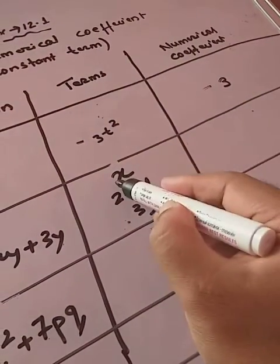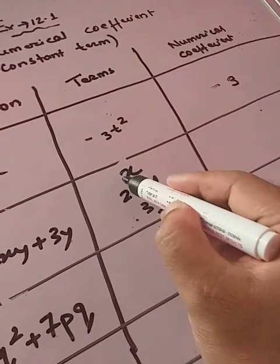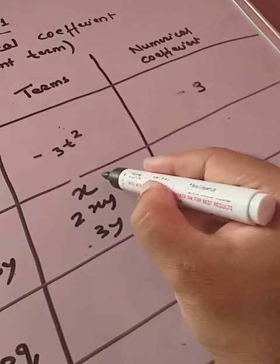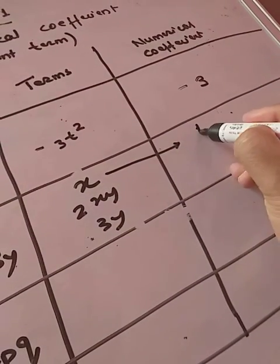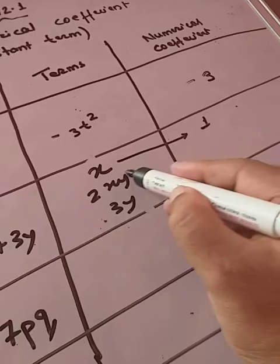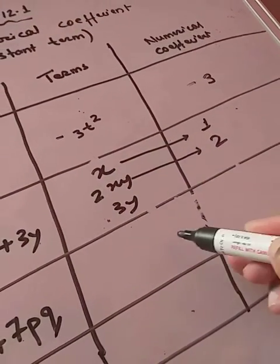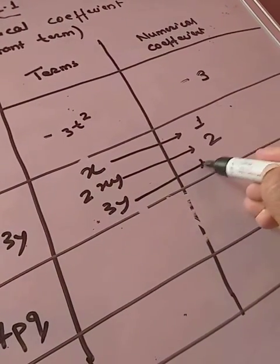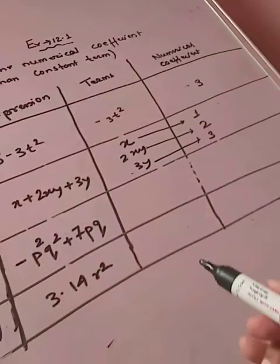Now, for this, what is the number? Do you find any number is there? If you do not see any number, that means 1 is there. So, for this, numerical coefficient is 1. For this, numerical coefficient is 2. And for this, numerical coefficient is 3.